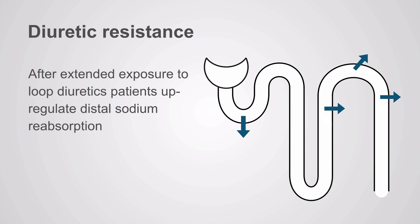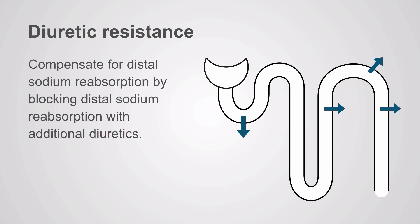This also occurs after extended exposure to loop diuretics. Patients upregulate distal sodium reabsorption. The loop diuretic causes a lot of distal sodium delivery, and the kidney responds by upregulating sodium reabsorption. We can actually see hypertrophy of the distal convoluted tubule on kidney biopsies in patients who have been on loop diuretics.